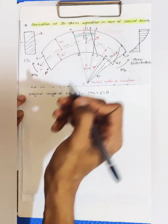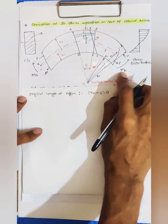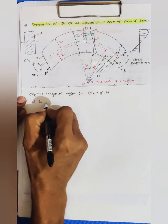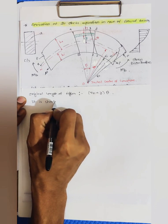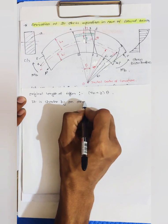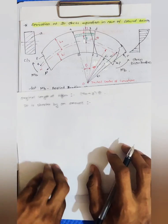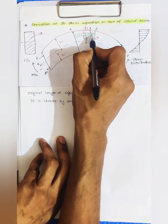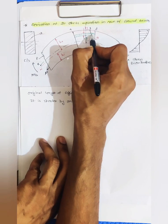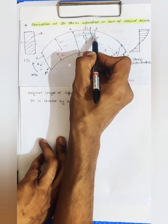This layer, after application of bending moment MB, is shortened by some amount. I want to find the length of this fiber after shortening.